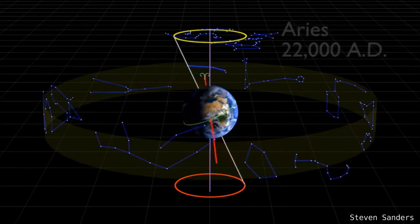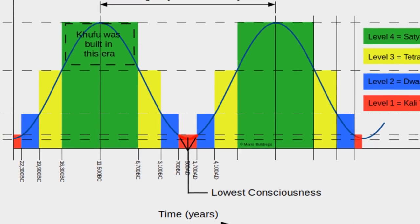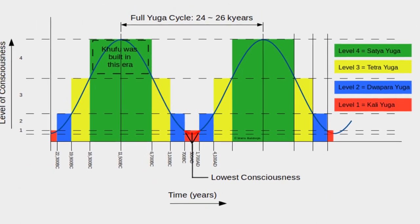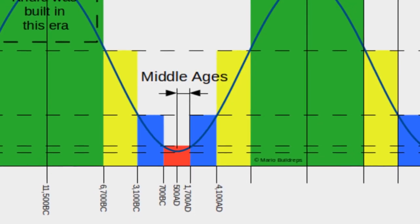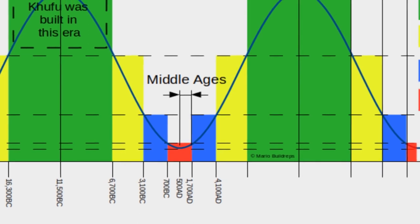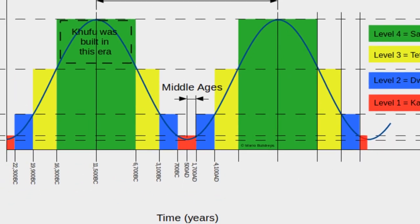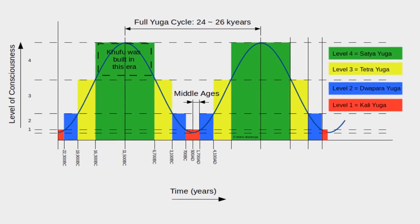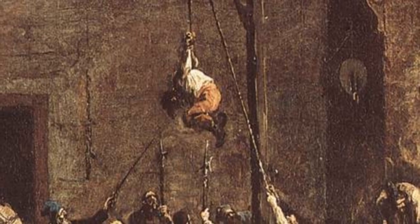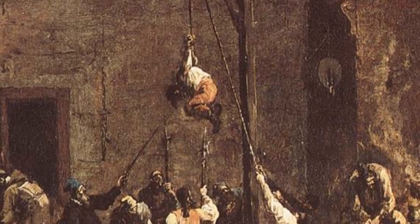According to Yukteswar's Yuga cycles, global consciousness was at its lowest around 500 A.D. And indeed, the medieval period, the Middle Ages, was between 500 and 1500 A.D. During that period, humans were generally unable to understand anything beyond raw matter and survival. The consciousness of humanity was submerged in darkness.